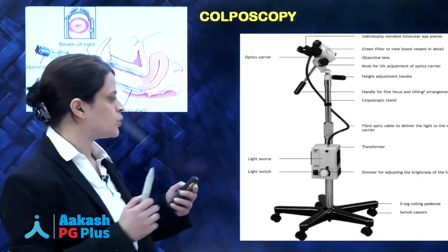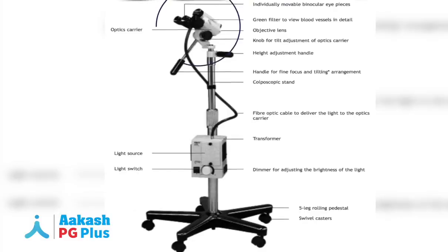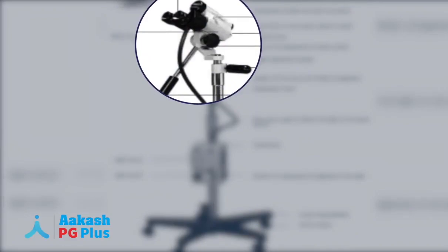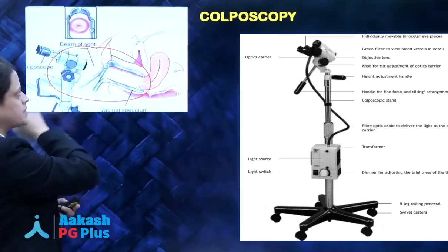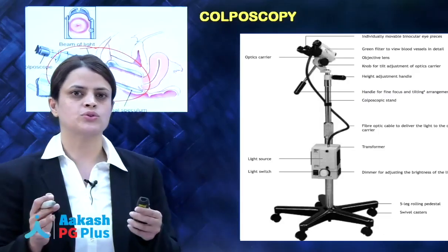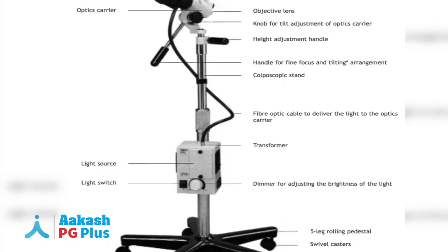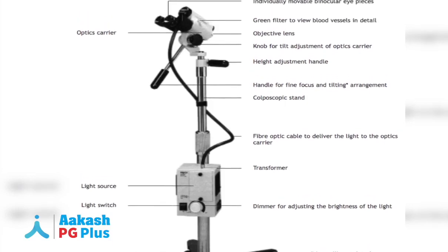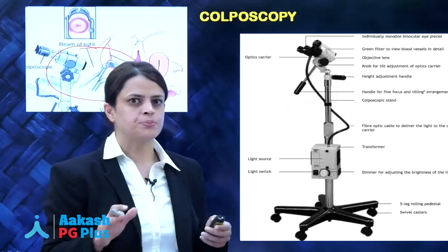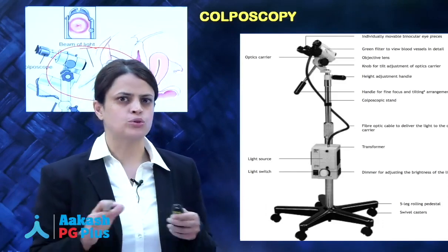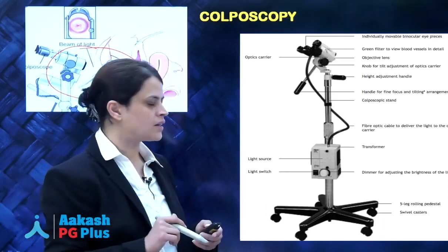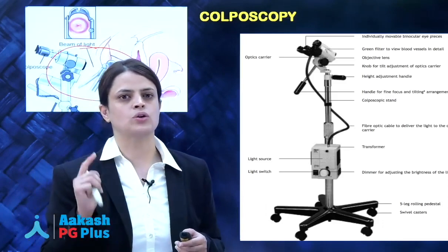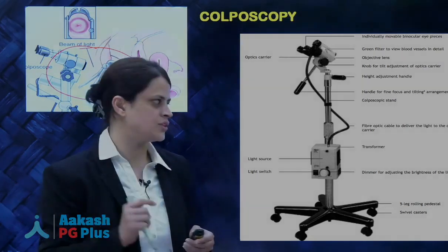A colposcope is essentially a low-power binocular microscope which helps us to visualize the cervix under magnification. Normally the colposcope produces 16 to 40 times magnification of the cervix. Colposcopy is usually done as an outpatient procedure — most hospitals have a colposcope installed in one of the OPD rooms. There are three steps to a colposcopic cervical procedure.